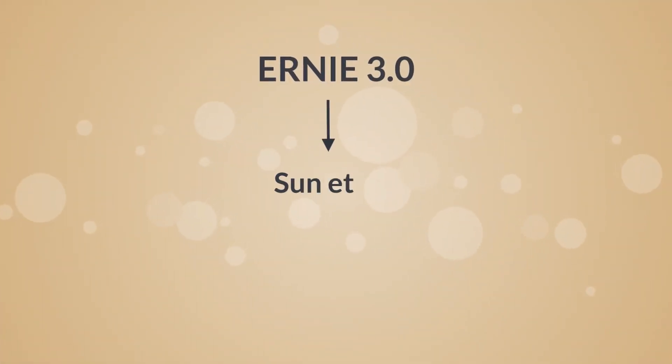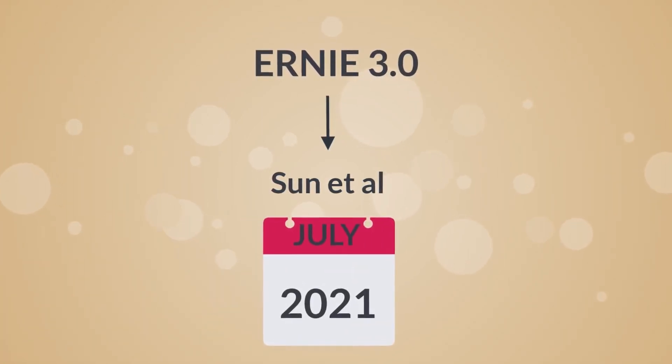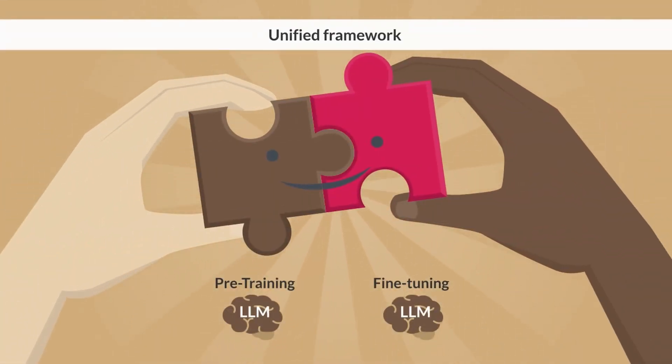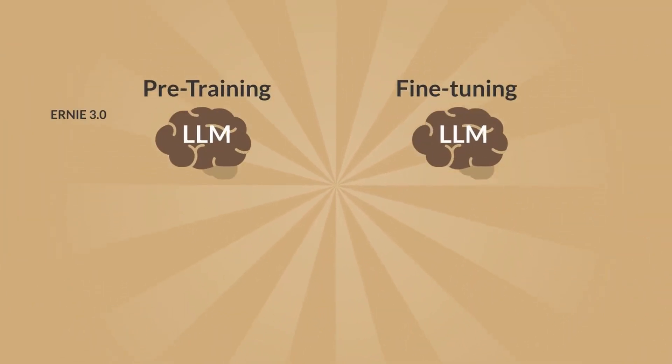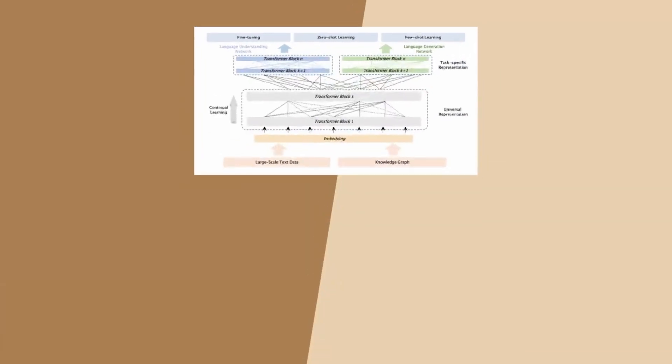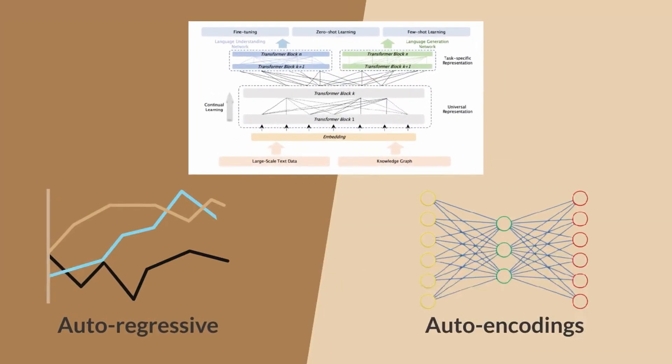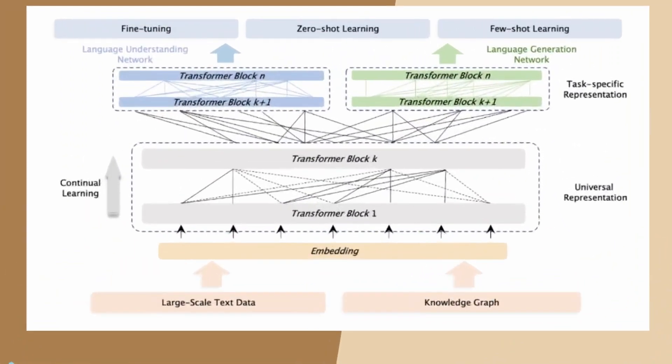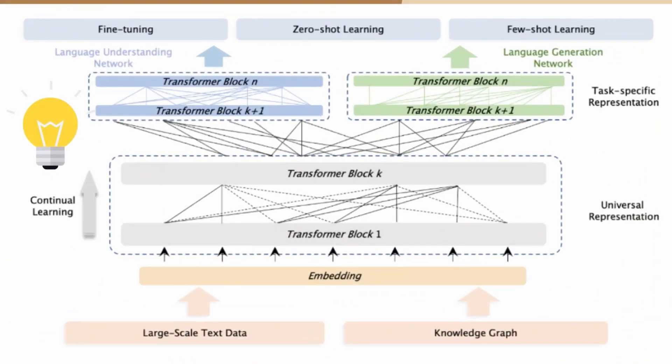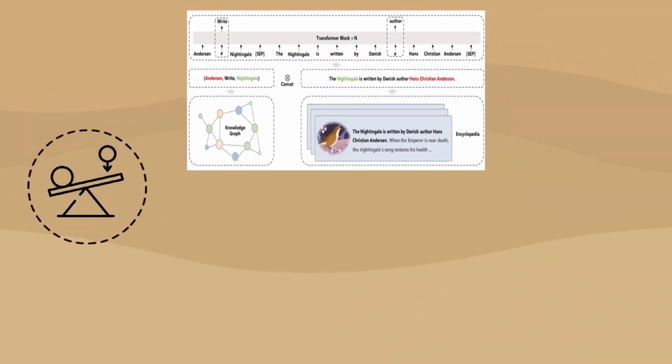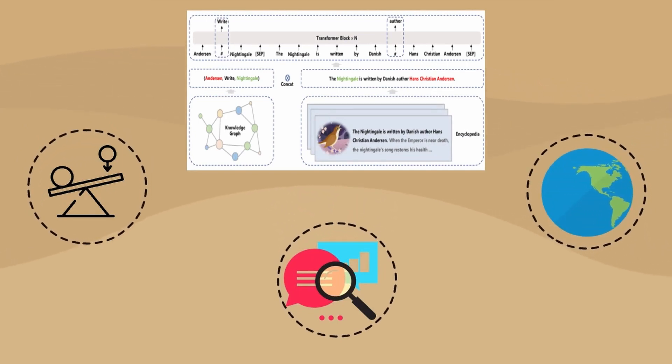Ernie 3.0, proposed by Sun et al. in July 2021, is a unified framework for pre-training large-scale knowledge-enhanced models and contributed to taking a significant leap in pre-training methodologies for language models in 2021, distinguished by its hybrid architecture that amalgamates the strengths of both autoregressive and auto-encoding designs. This synergetic framework was designed to enhance the model's adeptness at tasks across the spectrum of natural language processing. It leverages a massive corpus of textual data alongside a comprehensive knowledge graph, as illustrated in the figure showing the universal knowledge text prediction, enabling it to incorporate a broader context and deeper understanding into its language representations.